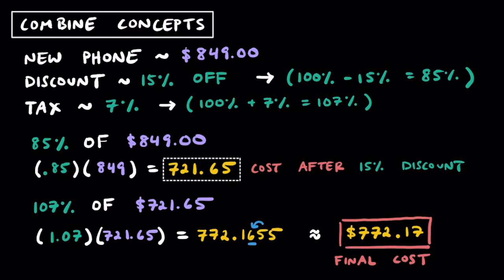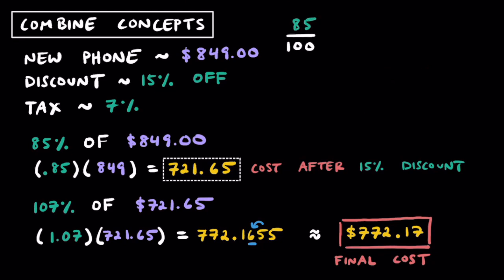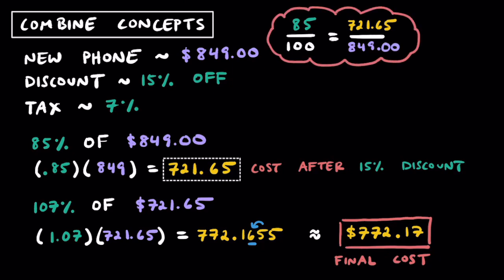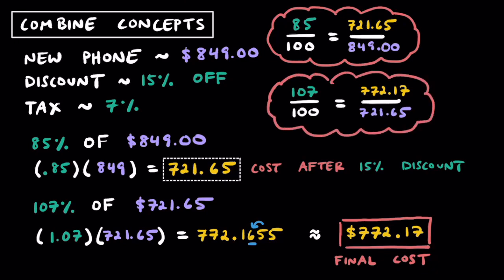Using percent proportions for the phone example, there are two to consider. The first is 85 over 100 equals 721.65 over 849.00 — paying 85% of the original price gives $721.65. The second is 107 over 100 equals 772.17 over 721.65 — since 107 is bigger than 100, the $772.17 is bigger than $721.65. When you go shopping and receive discounts or coupons, keep in mind you'll have to pay tax on top, and that's calculated on the discounted amount.